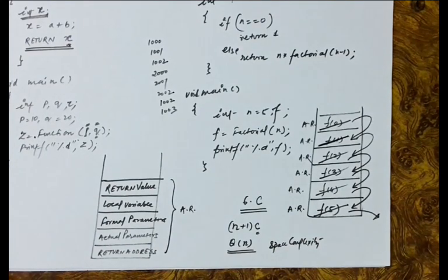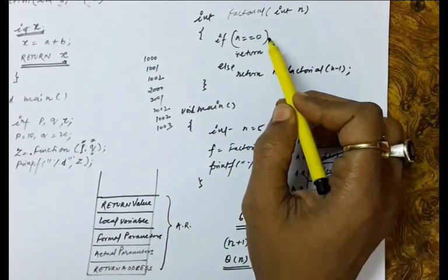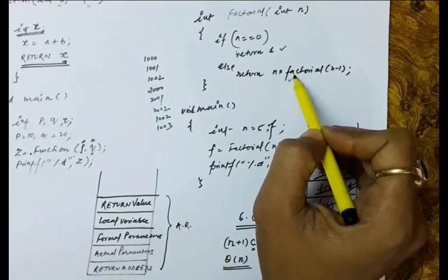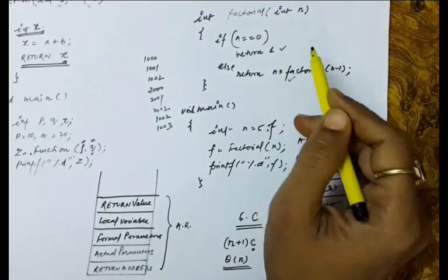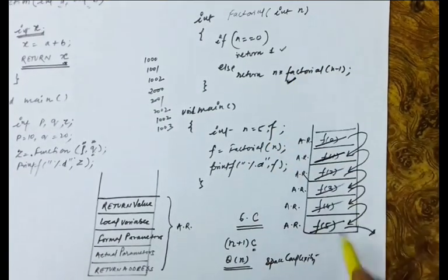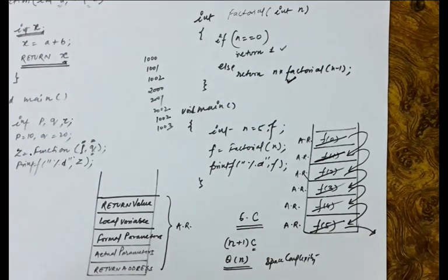What will be the time complexity? Every time a function is called, you need to check the base condition. If n is 0, you return 1; otherwise you call the recursive function. So either you will be doing one or the other. The activation records are maintained by performing push and pop operations on the stack.